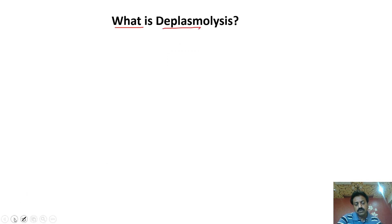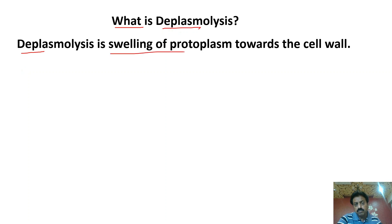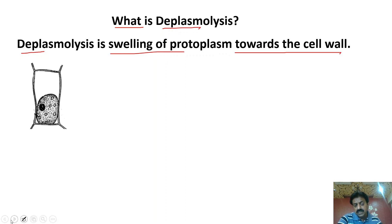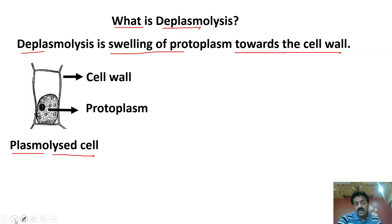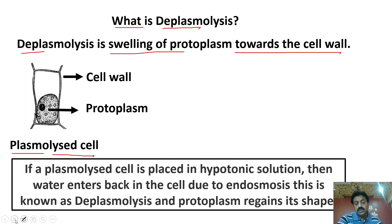Ab hum aate hain deplasmolysis ki taraf. What is deplasmolysis? Deplasmolysis is swelling of protoplasm — protoplasm ka phir se swell up ho jaana — aur phir uska apni cell wall se jud jaana. Dear students, humne yahan pe ek cell le liya — is cell ko main keh raha hoon plasmolyzed cell. Dekhen isme plasmolysis ho chuka hai, cell wall aur protoplasm ke beech space nazar aa raha hai, kyunki protoplasm cell wall se alag ho chuka hai aur shrinkage ho chuki hai. Agar hum isko place kar den hypotonic solution mein, toh yeh recovery mein aa jaayega — is recovery ko hum padhaate hain deplasmolysis.